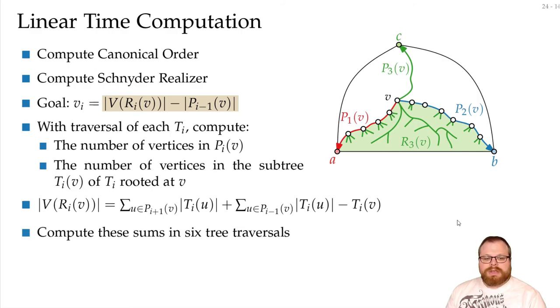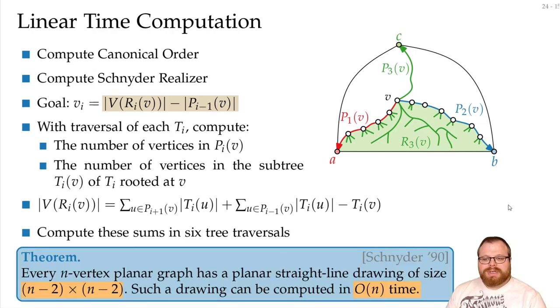So with a total number of six tree traversals, we can compute all these sums. Every tree traversal takes linear time. We have to do six of those, so we take linear time in total. And that's how we get our theorem, that we can compute this grid drawing in order of n time. Thank you for watching.